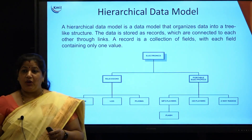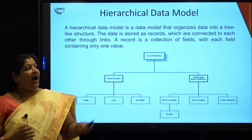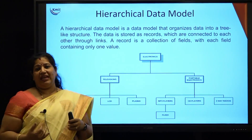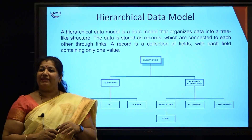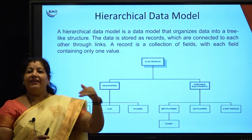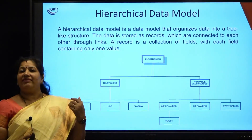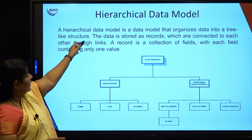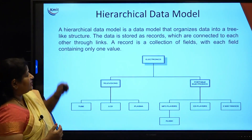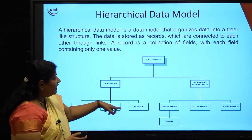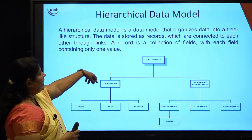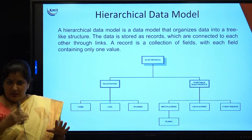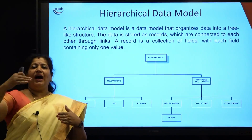Coming to the hierarchical data model — one of the older models. As the name itself says, it is a tree-based structure based on the hierarchy of the data. Taking the example of a college system: we have a hierarchy of principal, then heads of the department, then class teachers or class representatives (CRs), then the students. Here the data was organized in a tree-like structure. The data is stored in the form of records which are connected through various links — the links are like relationships. A record is a collection of fields with each field containing only a specific value.